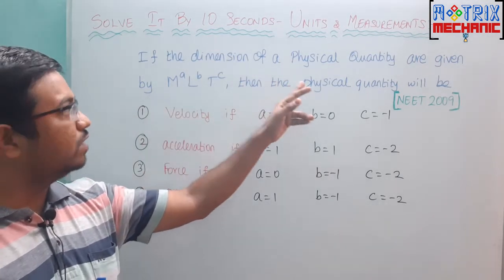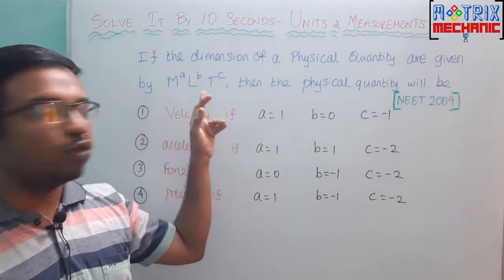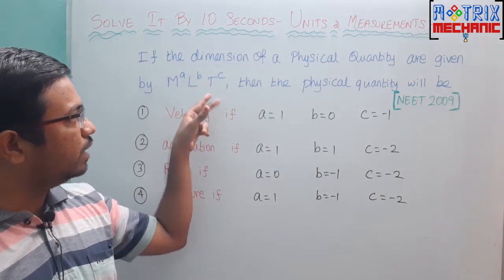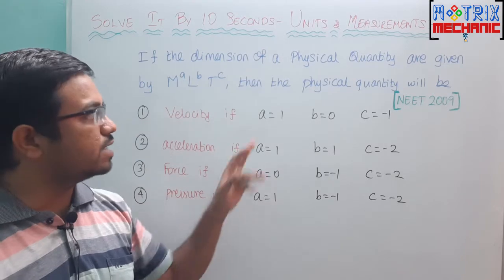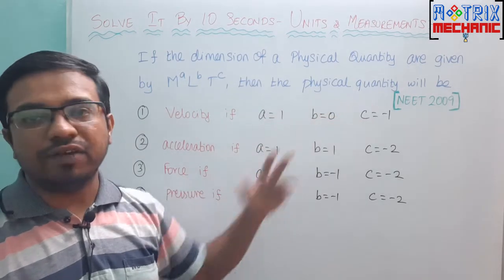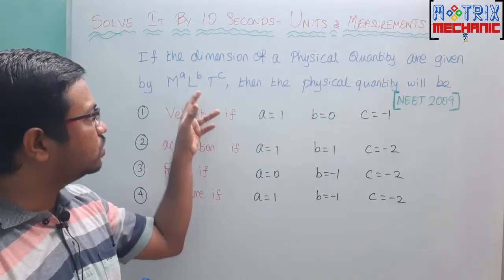The dimension of a physical quantity are given by M to the power a, L to the power b, T to the power c. Then they are asking, what is the physical quantity for this one?